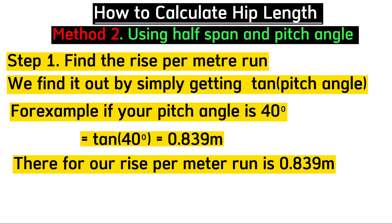For example, if your roof pitch angle is 40 degrees, tan(40°) = 0.839 meters. This means for every meter run, your roof rises by 0.839 meters or 839 millimeters.